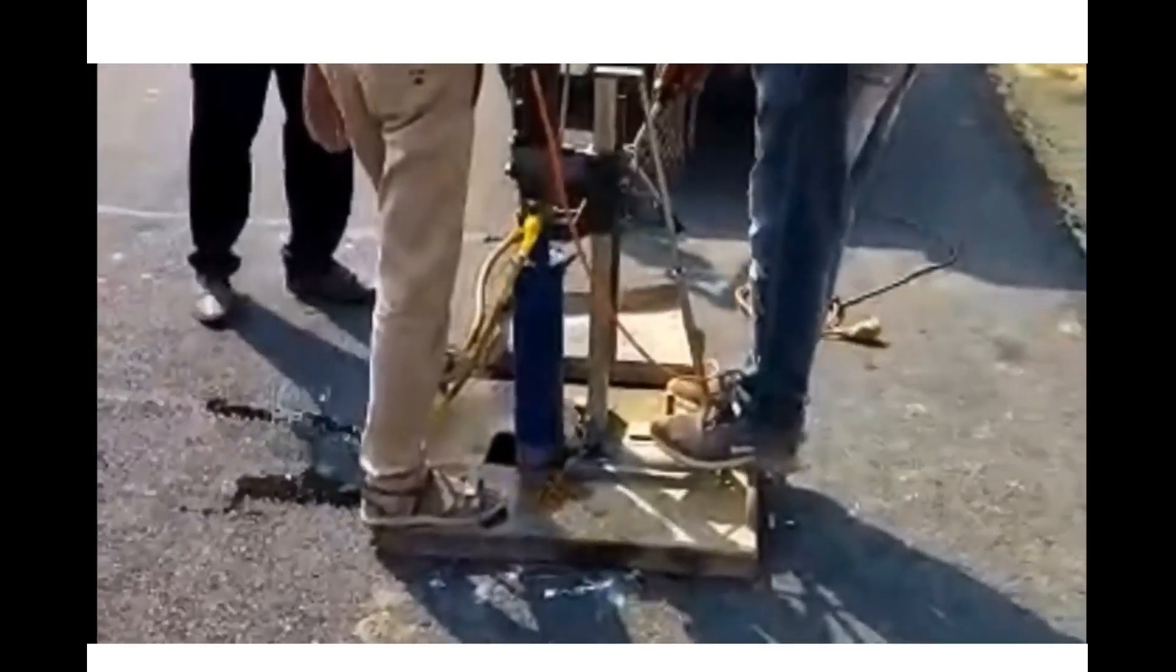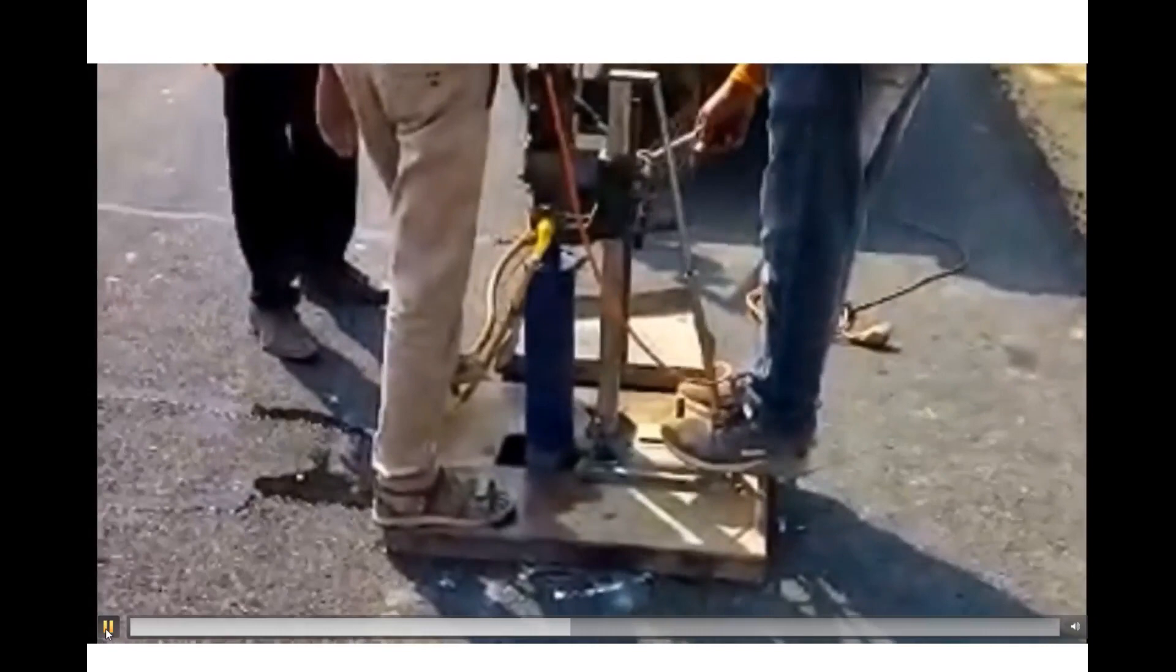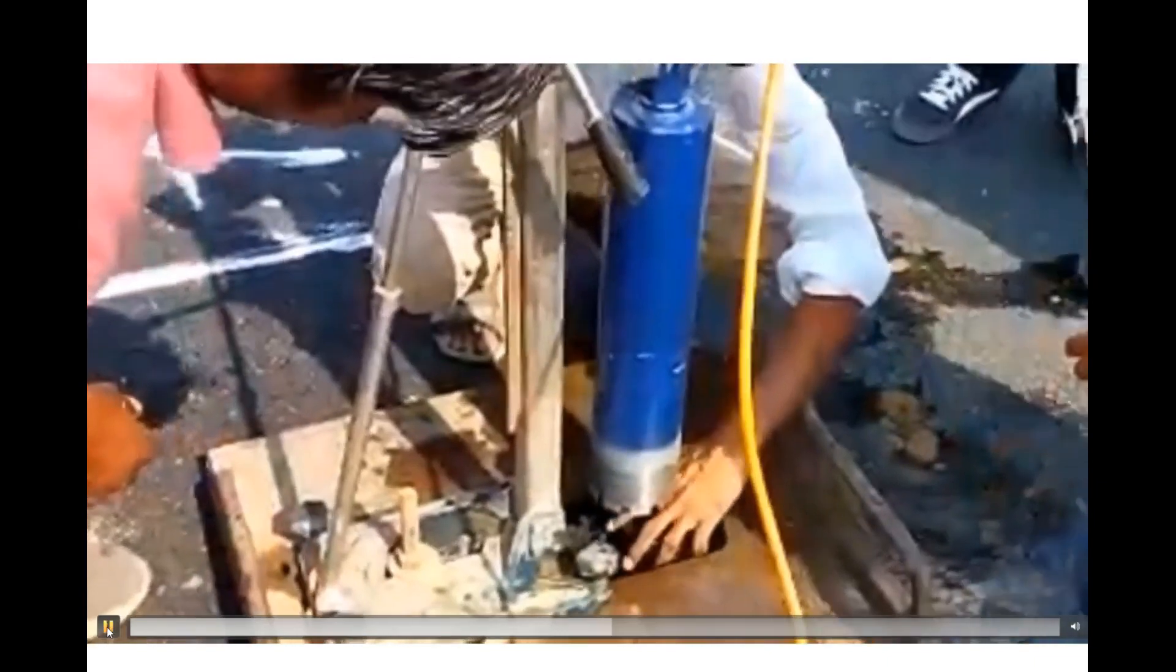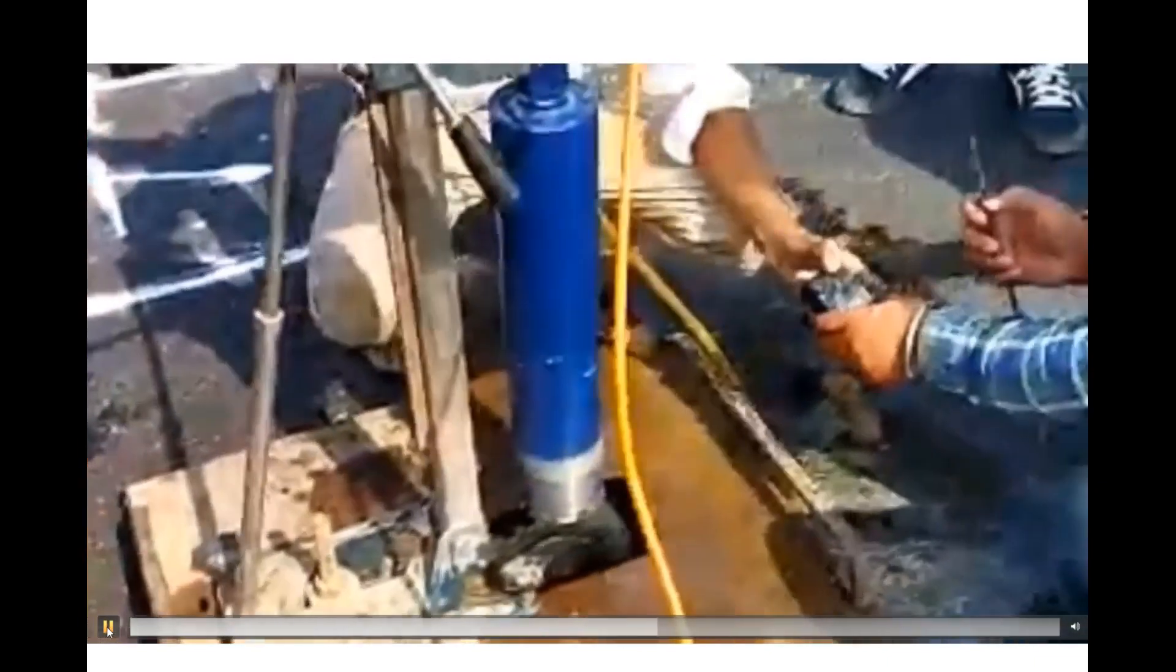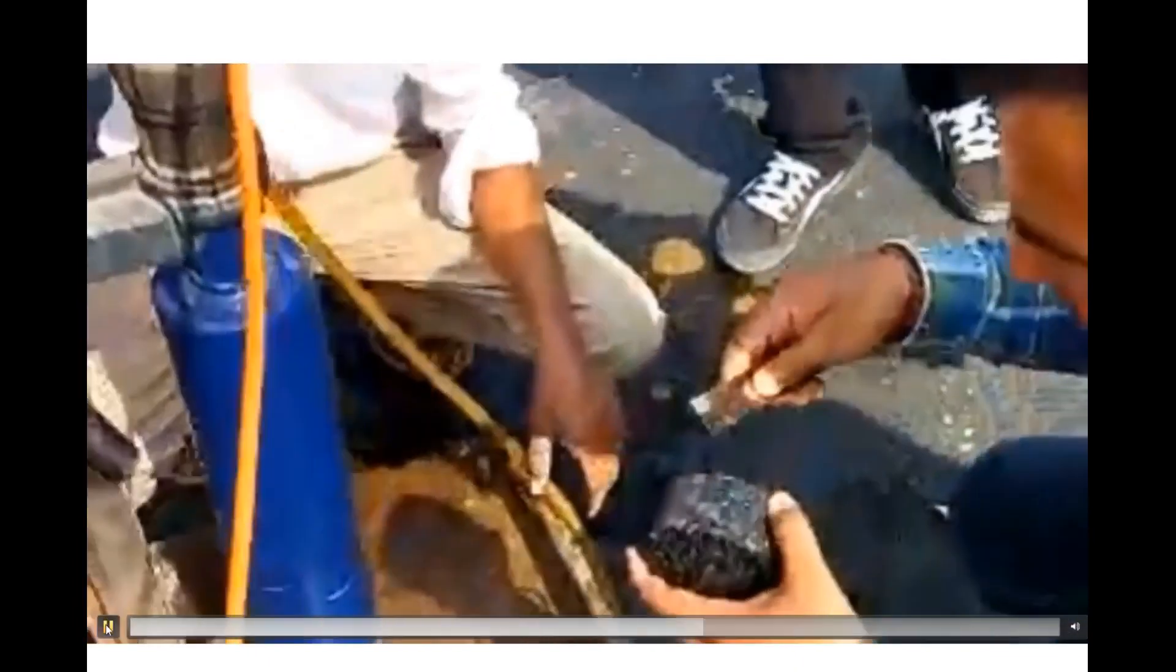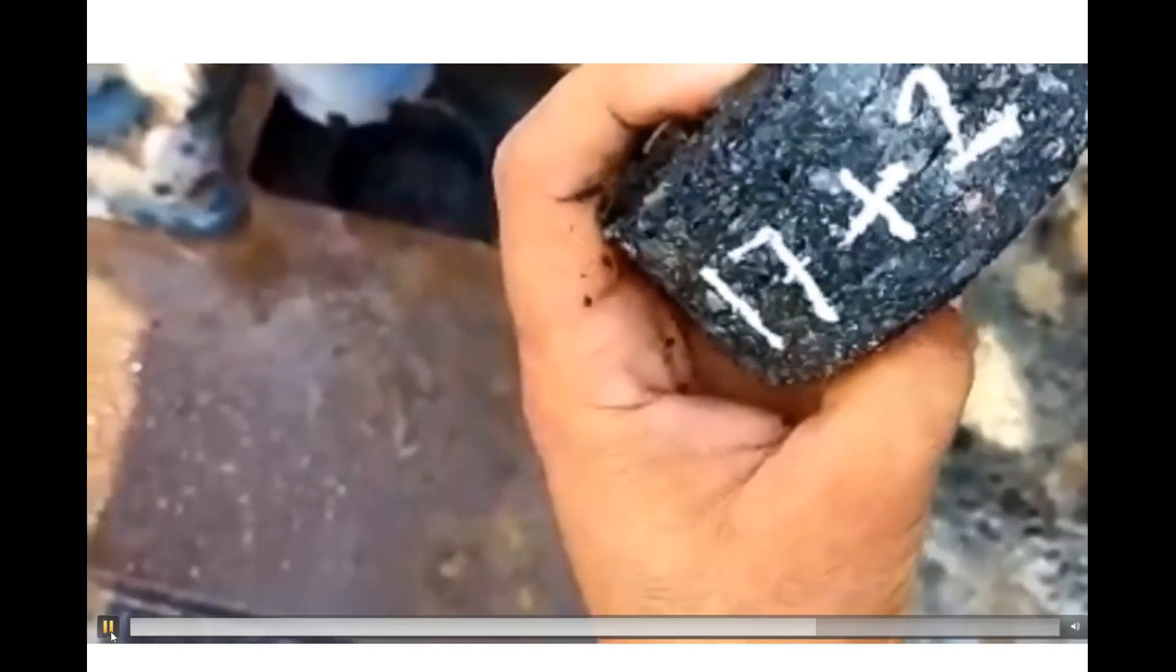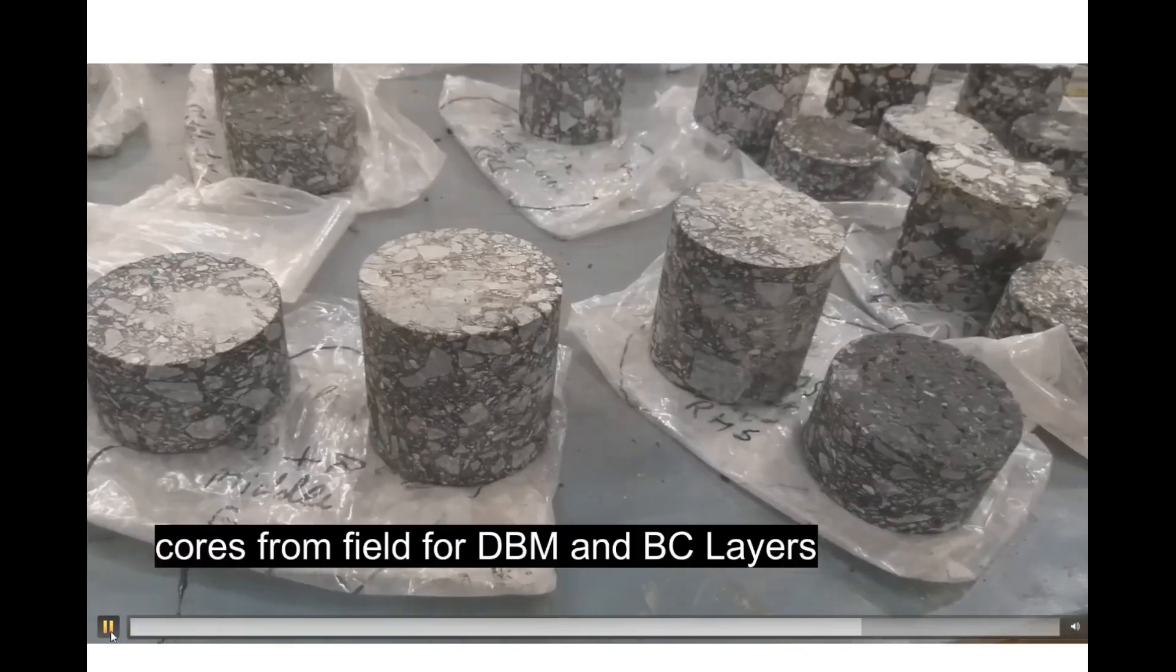Core may be of one layer or it may be of two layers depending upon the requirement. Once you take out the core, it is important to mark it properly so that it represents the chainage.